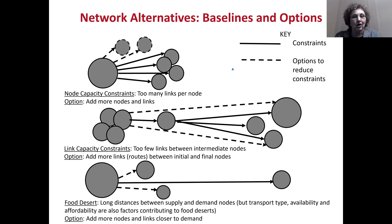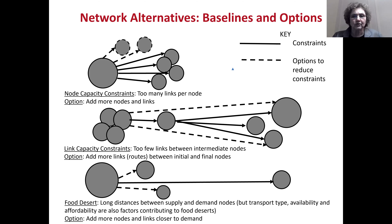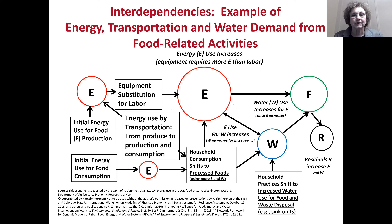Secondly, the middle row shows link capacity constraints as well — there are too few links between intermediate nodes, and you get a lot of congestion. The option is to add more links between initial and final nodes. Finally, the theme of food deserts implies that there are long distances between supply and demand nodes, but transport type availability and affordability are also factors contributing to food deserts.